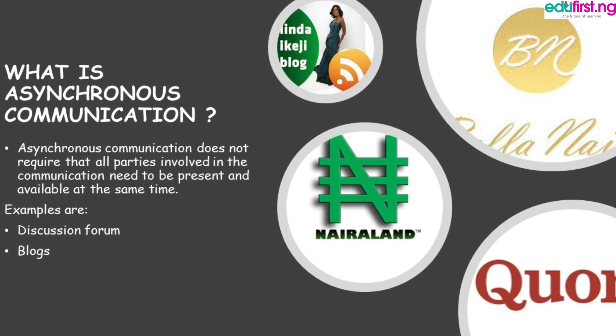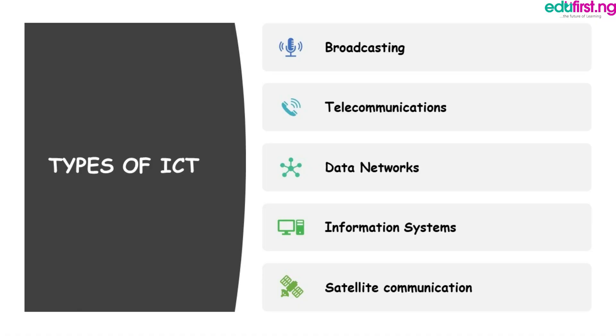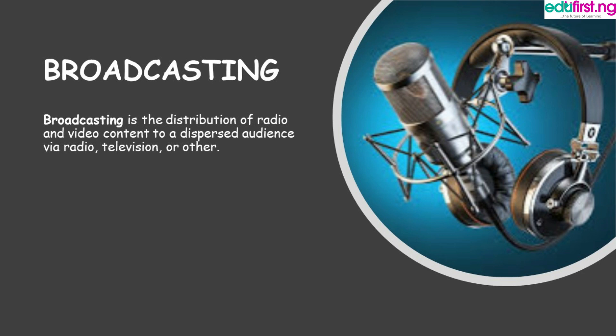Now, what are the types of ICT? We have broadcasting, telecommunications, data networks, information systems and satellite communication. Broadcasting is the distribution of radio and video content to a dispersed audience via radio, television or other broadcasting means.